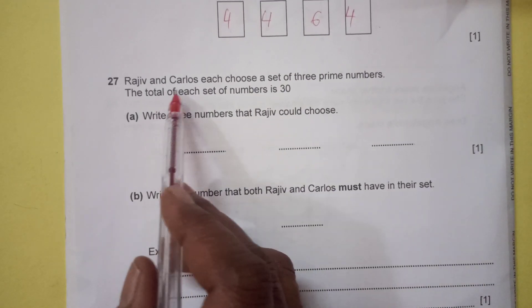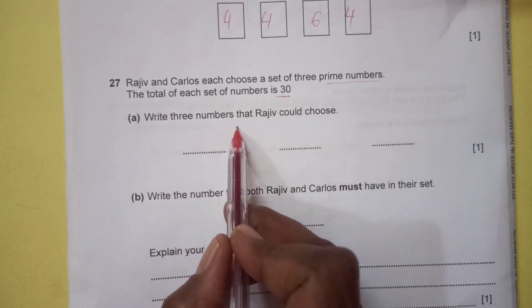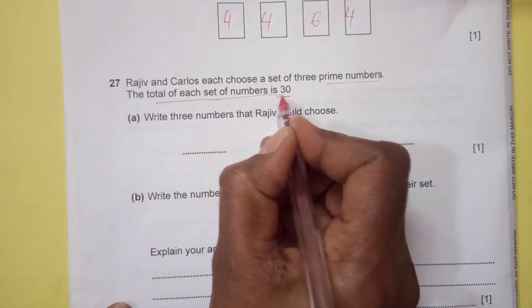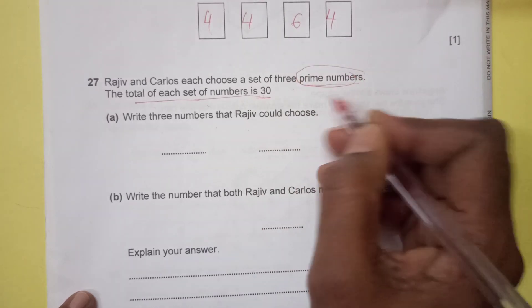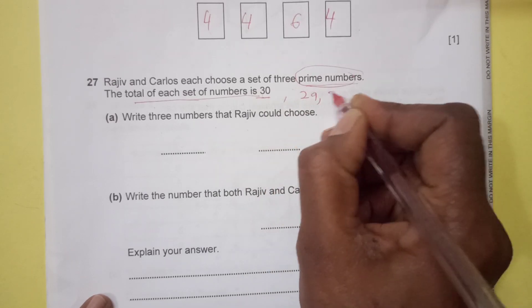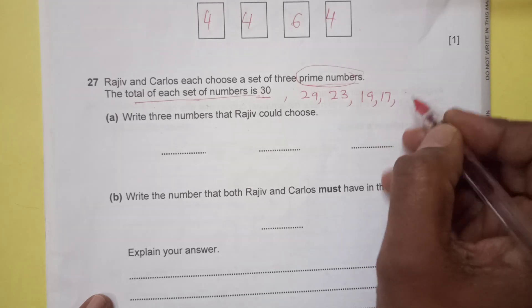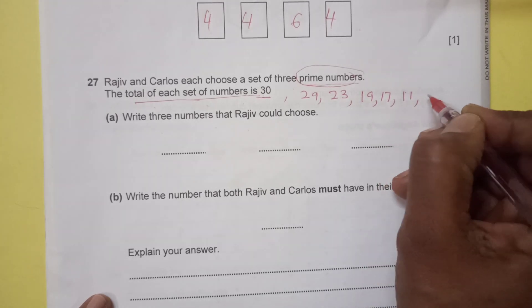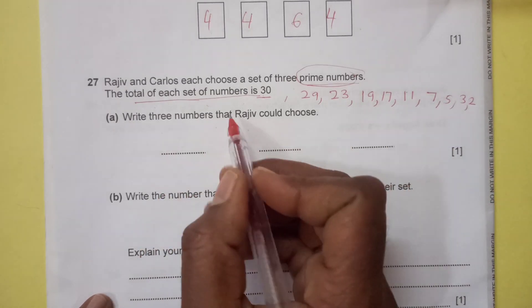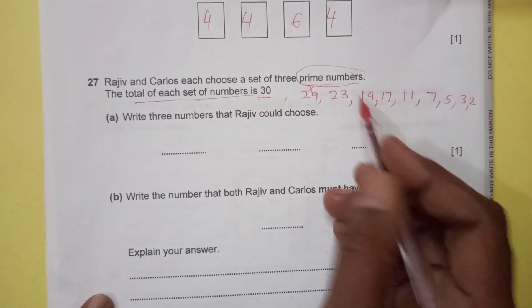Now number 27. Rajiv and Carlos each choose a set of three prime numbers. The total of each set of numbers is 30. Write down the number that Rajiv could choose. As the total of each set is 30 and the numbers are prime, we can write down numbers which are prime less than 30: 29, 23, 19, 17, then 11 and 9, 7, then 5, 3, 2. We are looking for the numbers that give us a total of 30.